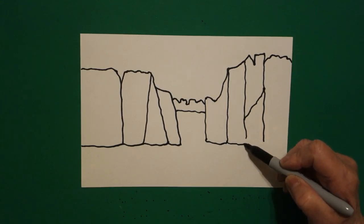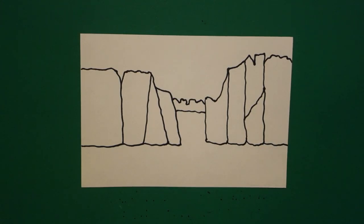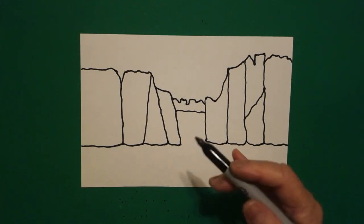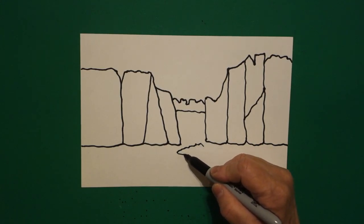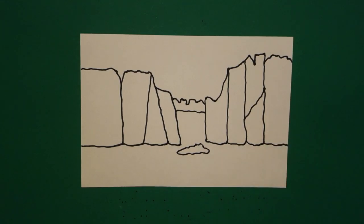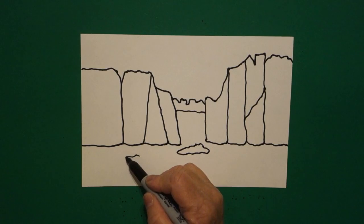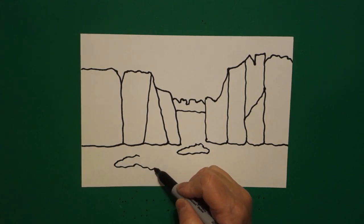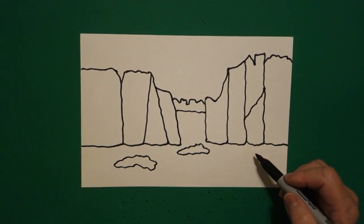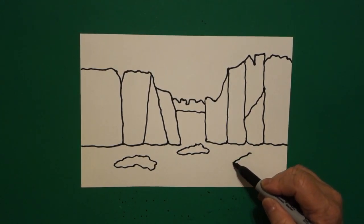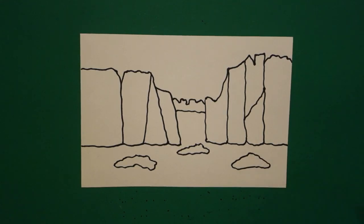Come on the right side, wavy line up, keep going, up, connect, and off the page. Right here in the center, we're going to draw a wavy line, curve line, curve line, connect. Come over here on the left hand side, we're going to draw a wavy line, wavy line, curve line, up, connect. And right over here on the right, we're going to draw another wavy line, curve line, wavy line, up, connect.